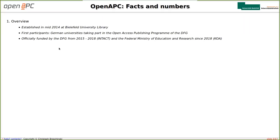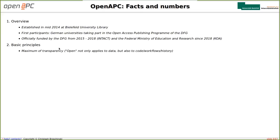The project ran for about a year. In 2015, we also received official funding by the DFG under the project name INTACT. And since 2018, we have been funded by the German Federal Ministry of Education and Research, the BMBF, under the project name COA. Our first and foremost principle is a maximum of transparency. When we talk about open, open should not only apply to data, but also to things like coding, programming code, workflows, and the total project history.